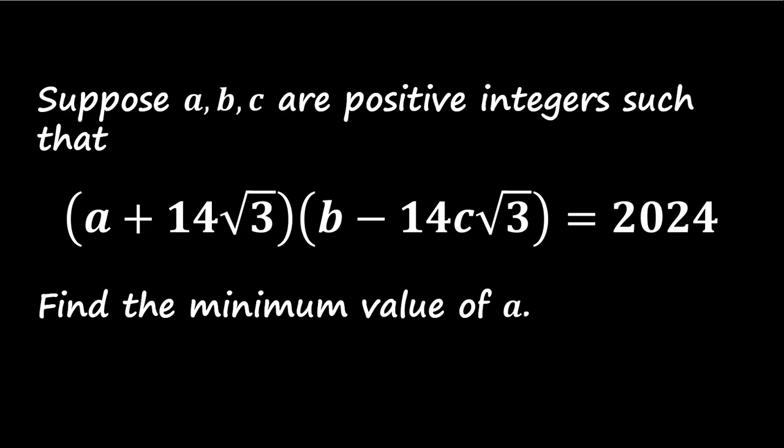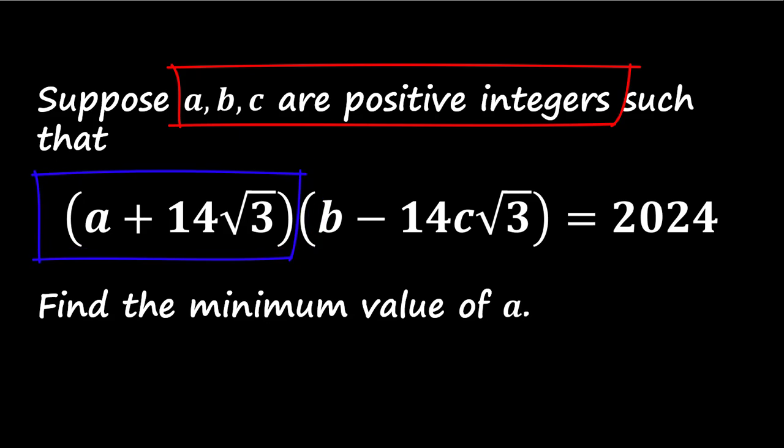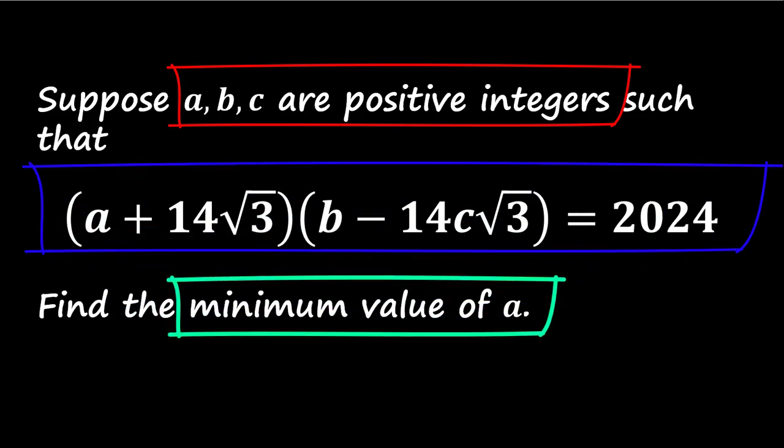The problem is as follows. Suppose a, b, and c are positive integers such that the product of the expressions a plus 14 root 3 and b minus 14c root 3 is equal to 2024. Find the minimum value of a.